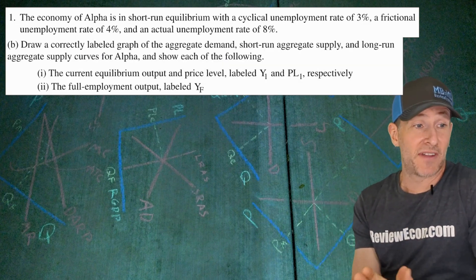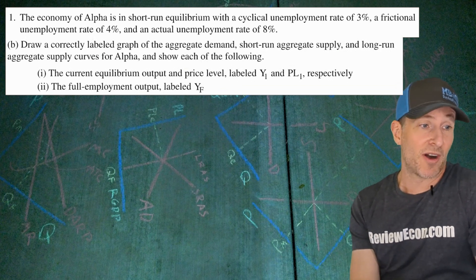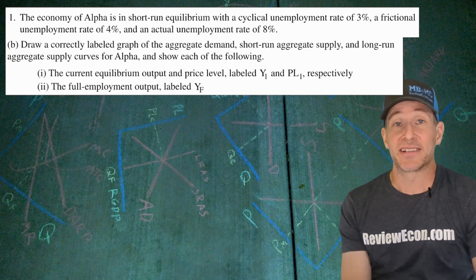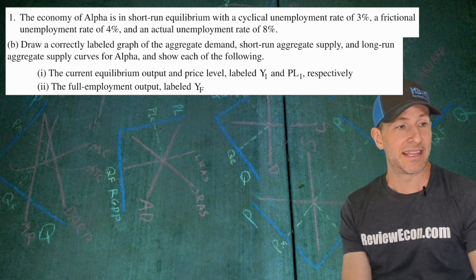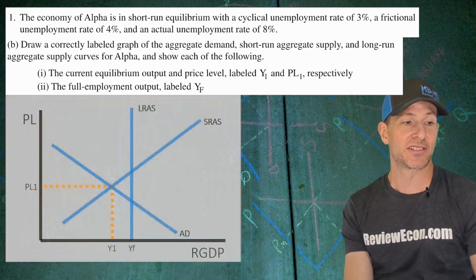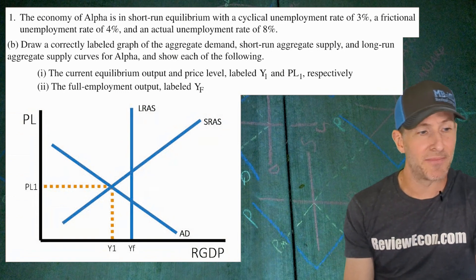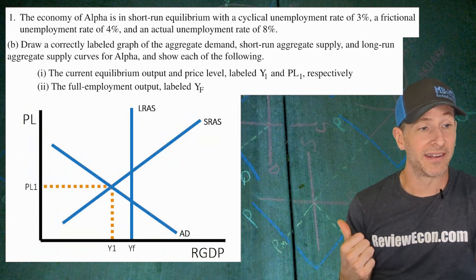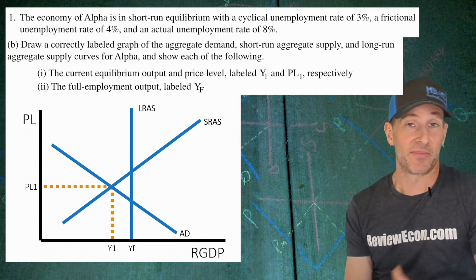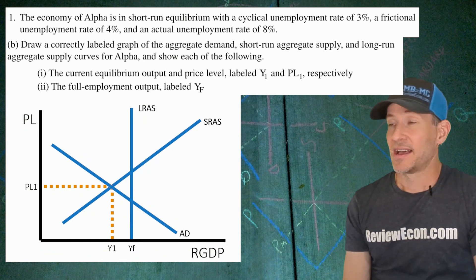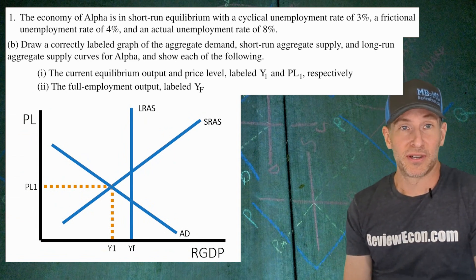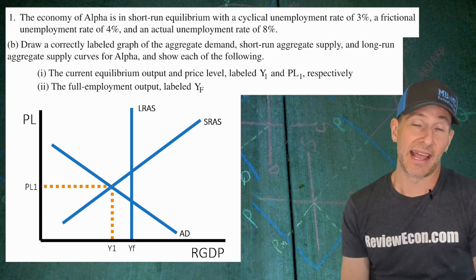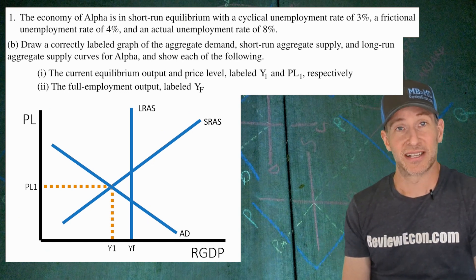On to part B. We're going to graph an aggregate demand and aggregate supply model based on the current equilibrium for Alpha. We've got a recessionary gap, so you should have your ASAD model with Y1 coming from the intersection between aggregate demand and short-run aggregate supply, and it will be at a lower output than the full employment level of output that you should be labeling YF. We have our current equilibrium price level marked as well.